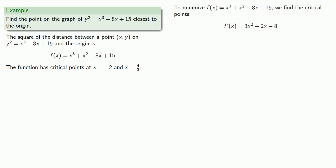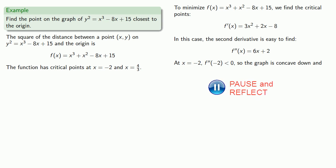Now in this one particular case, the second derivative is relatively easy to find. So we might use the second derivative test. At x equals negative 2, the second derivative is negative, so the graph is concave down. And x equals minus 2 corresponds to a local maximum. But we don't want the greatest value, we want the least value. So we'll check out the other critical point.